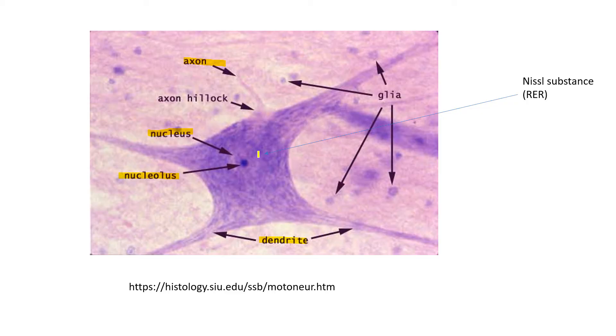And this basophilic substance right here is called Nissl substance, which is the rough endoplasmic reticulum of the neuron.